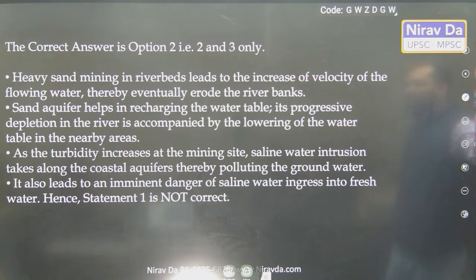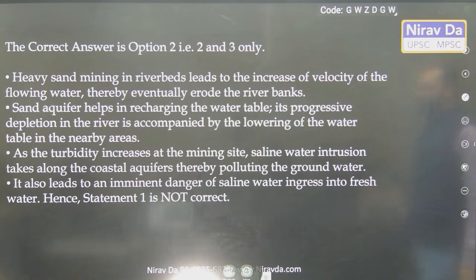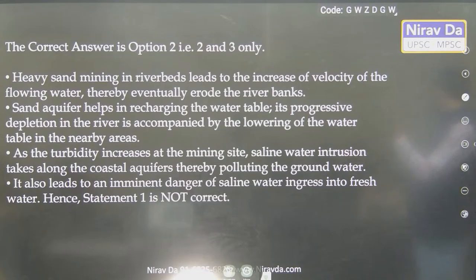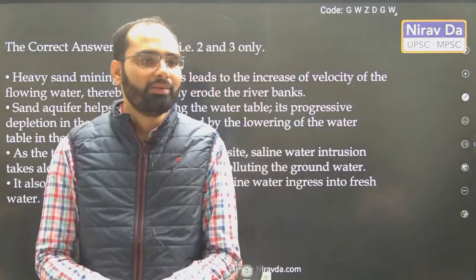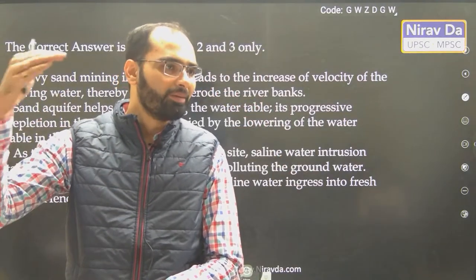Sand mining in riverbeds leads to increase in the velocity of flowing water, thereby eventually eroding the riverbanks. Sand aquifer helps in recharging the water table; its progressive depletion is accompanied by lowering of the water table. Why? Because the more sand you remove, the less resistance there is for water — water seeps through the sand. Imagine you have made almost a cement channel — water only flows through it then.